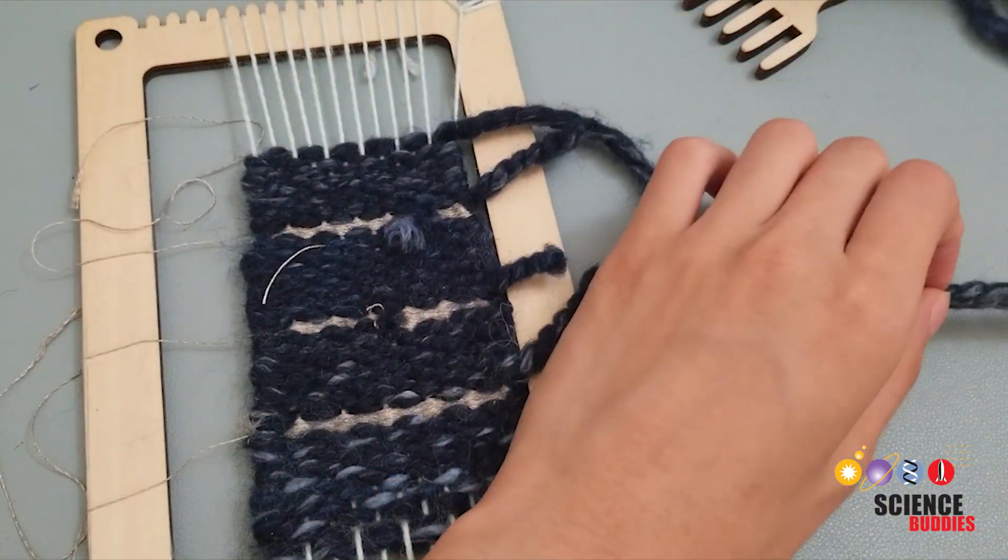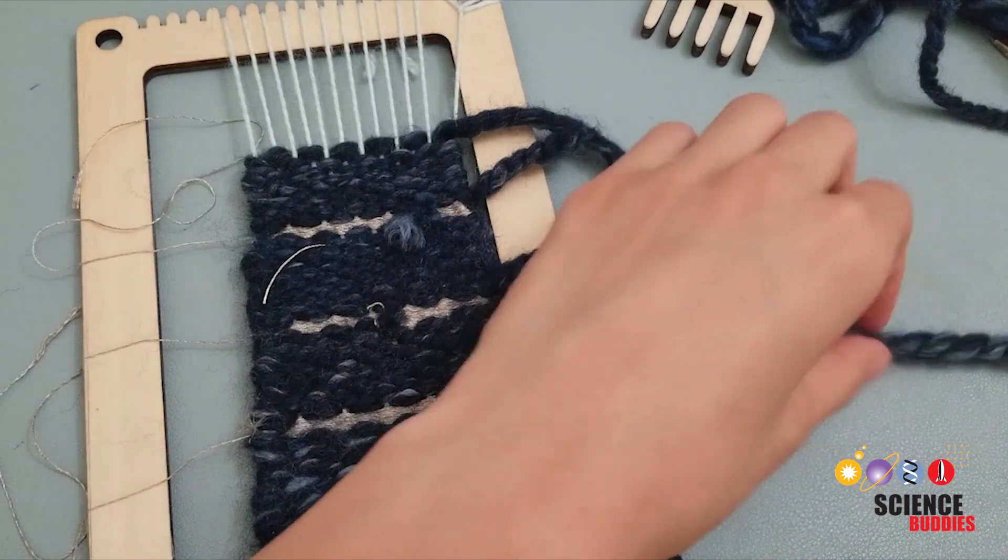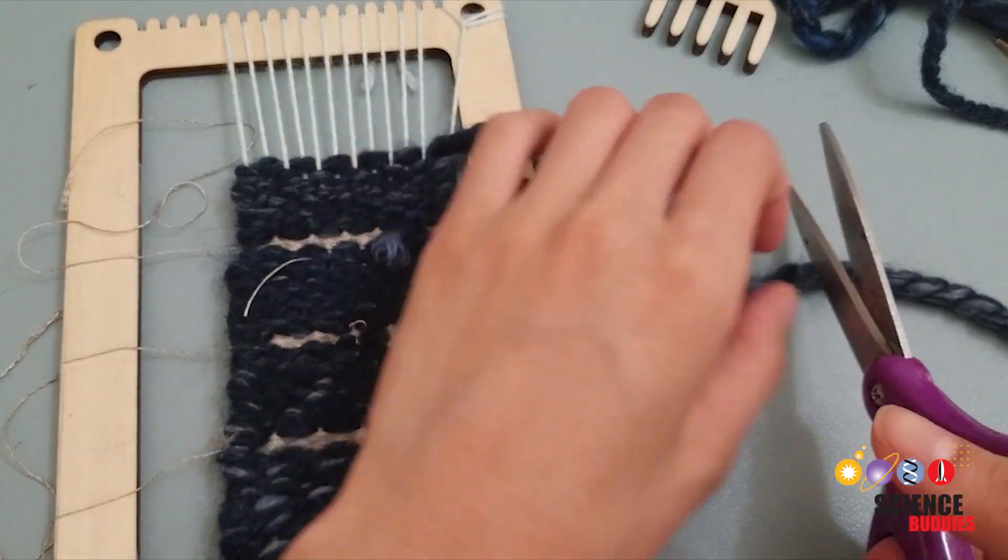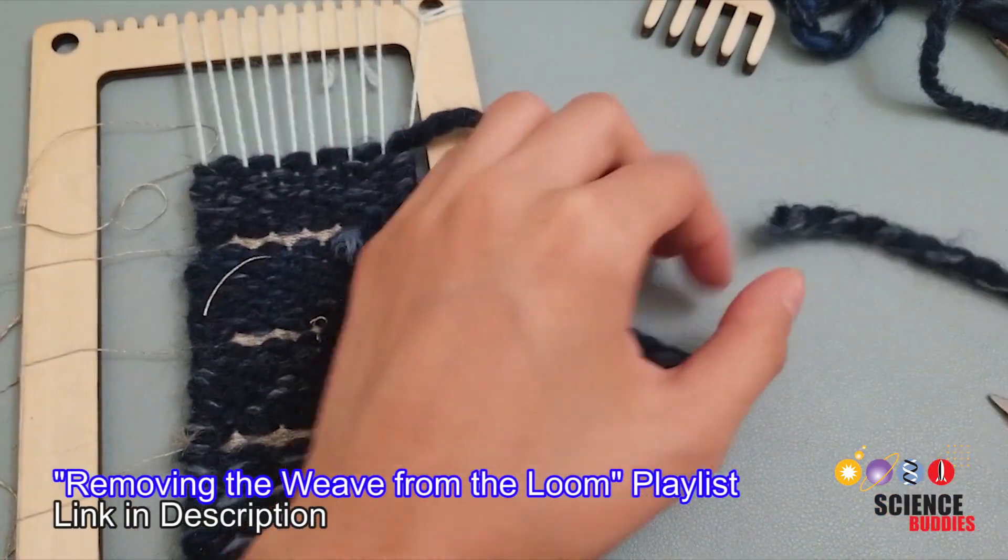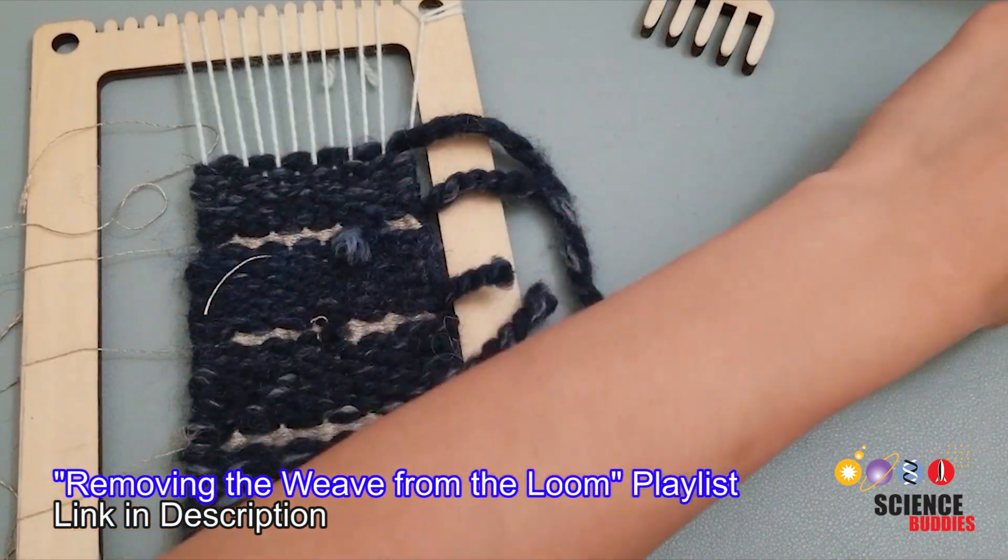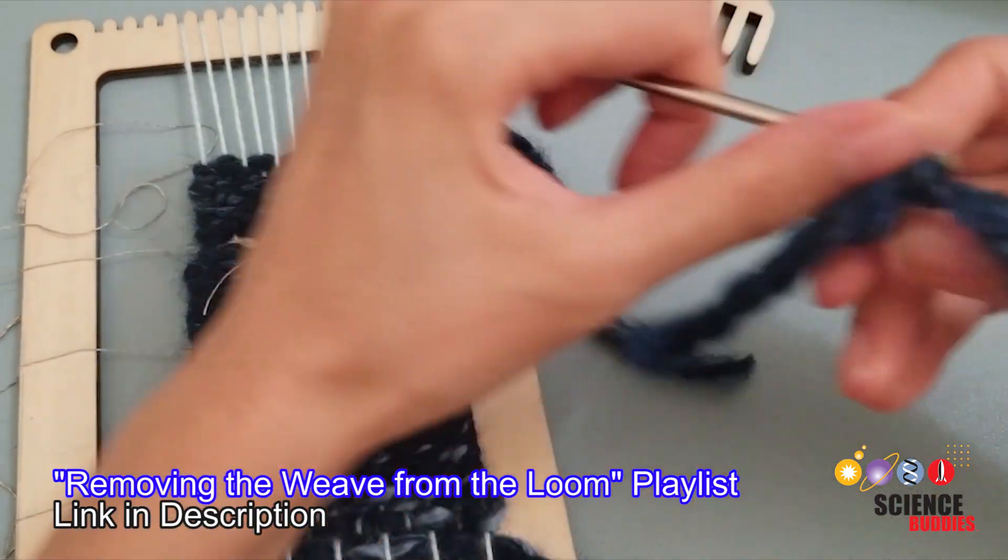Finish your weave and remove it from the loom. Follow the following steps if you have a similar loom. If not, use the directions given with your loom to finish your weave. See the curated YouTube playlist for video instructions on removing your woven patch from your loom.